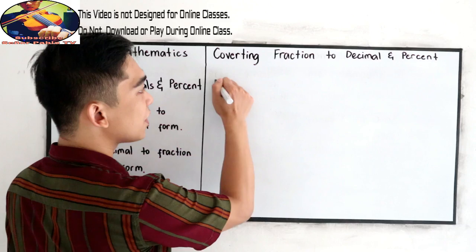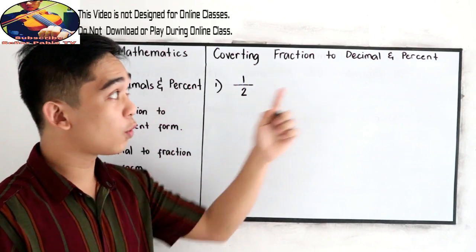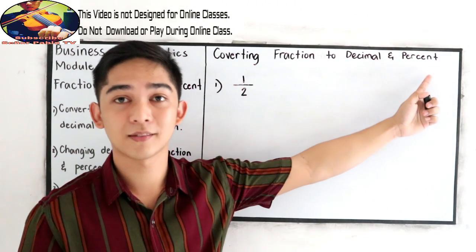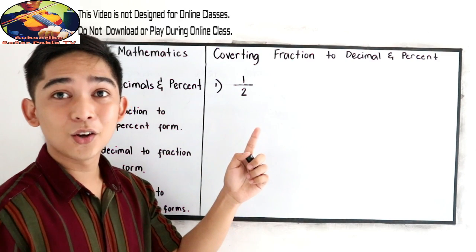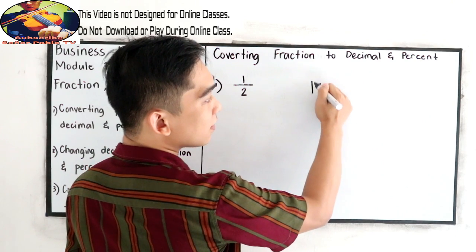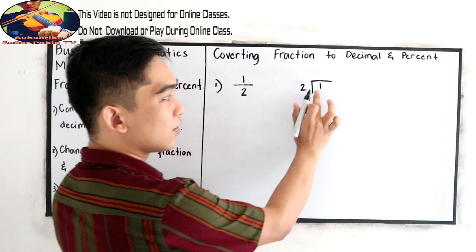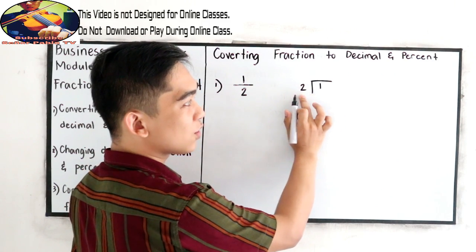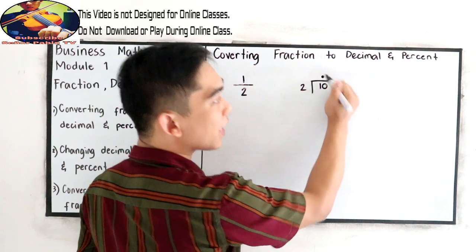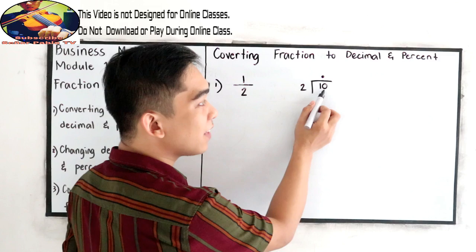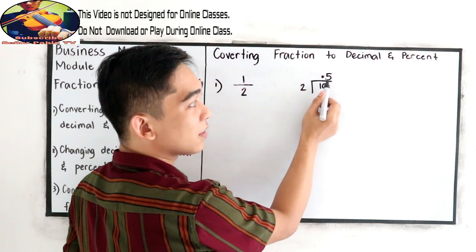Let's say we have 1 over 2 as example number 1 — we're going to write it in decimal and percent. So we have 1/2. To write in decimal, we need to divide: 1 divided by 2. Since 1 divided by 2 cannot be done directly, we write 0 and then the decimal point. So 10 divided by 2 is 5, which we write after the decimal point.